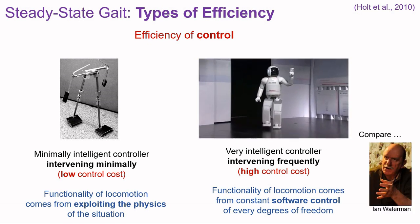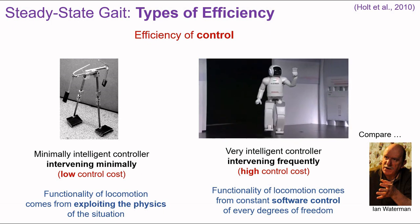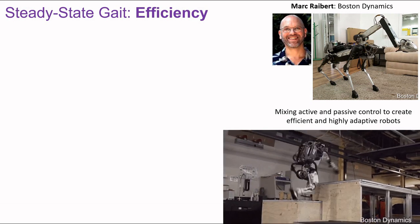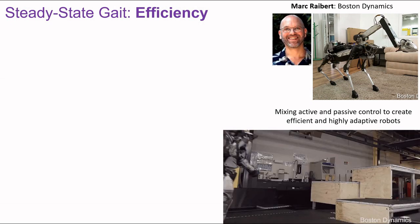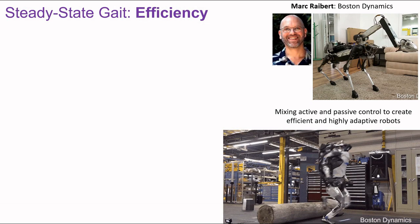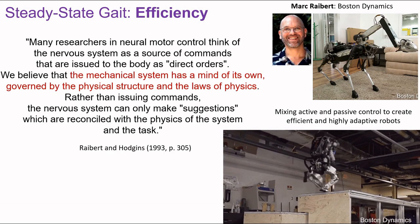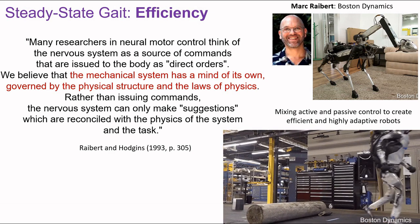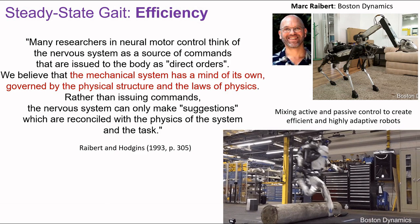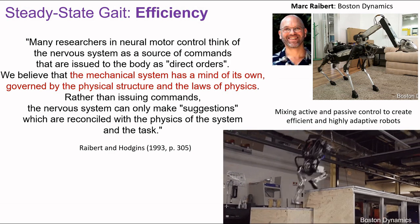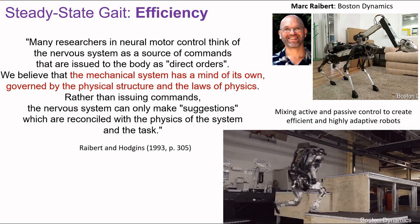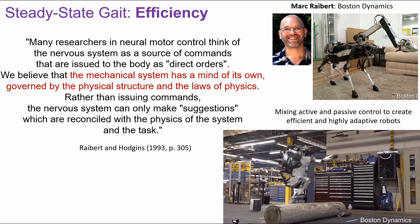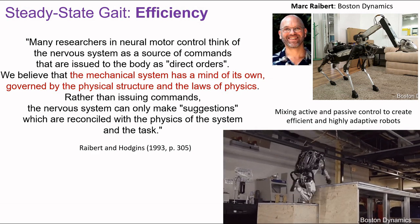We can draw a parallel here to the control problem faced by Ian Waterman, who has to visually monitor nearly all aspects of his movements at great cost to efficiency. Mark Raybert, the founder of Boston Dynamics, has stated: 'Many researchers in neural motor control think of the nervous system as a source of commands that are issued to the body as direct orders. We believe that the mechanical system has a mind of its own, governed by the physical structure of the body and the laws of physics. Rather than issuing commands, the nervous system can only make suggestions which are reconciled with the physics of the system and the task.' This shows remarkable similarities to the systems theory of human movement and motor control.